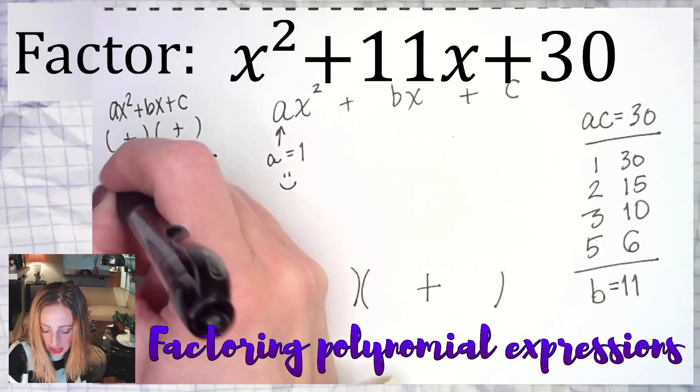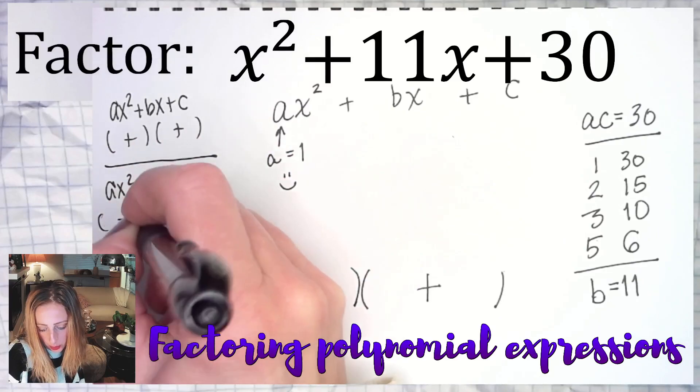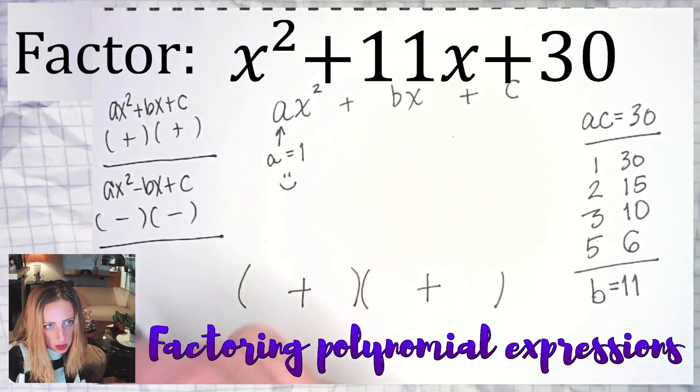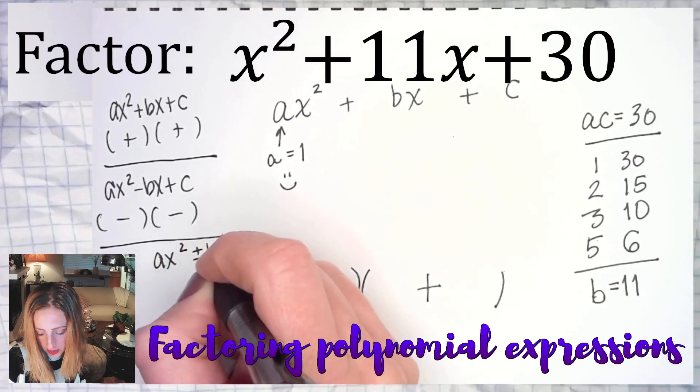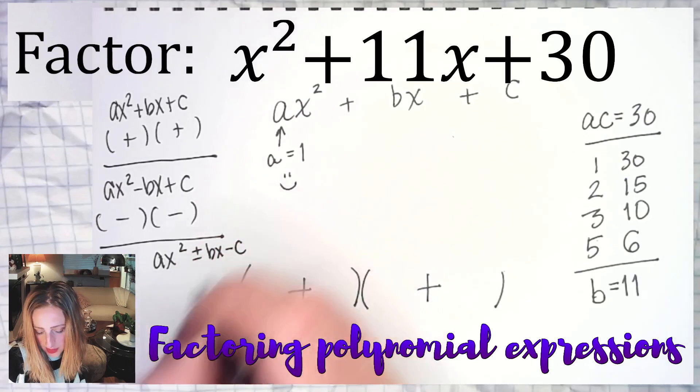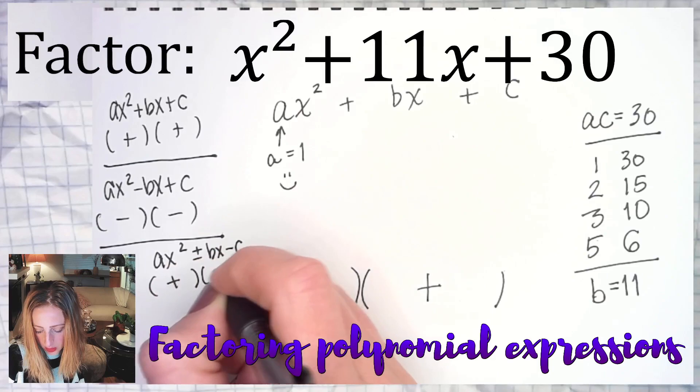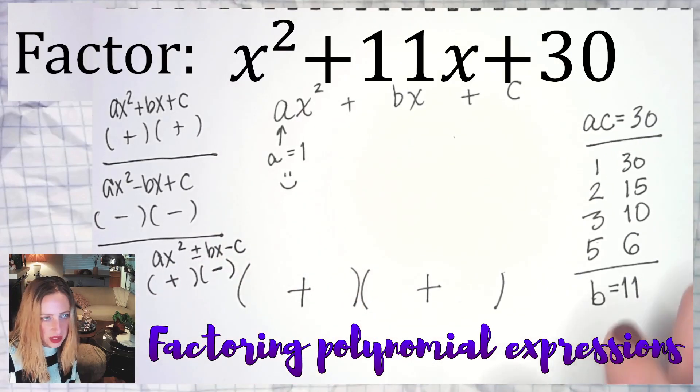If ax squared is minus bx plus c, both parentheses will be minus. And last, third case is ax squared plus or minus bx minus c. That means you'll have a plus and a minus, and you got to be a little bit more thinking on your feet to figure it out.